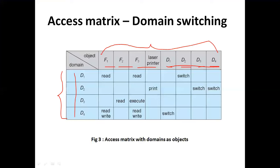Read, print, execute, write, and switch are all access rights. If a process is executing in domain d1, it can read f1, read f3, cannot use the printer, and there is an access right called switch. An entry of switch indicates that a process in domain d1 can switch to domain d2.